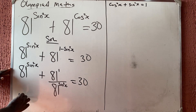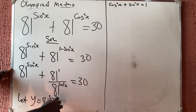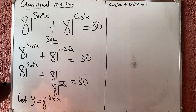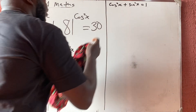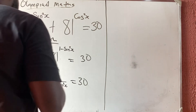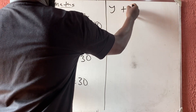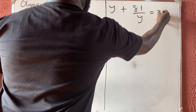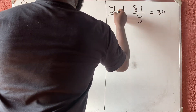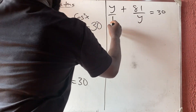Now let y equal 81 raised to the power sine squared x. Anywhere we see 81 raised to the power sine squared x, we simply substitute y. So we get y plus 81 over y equals 30.